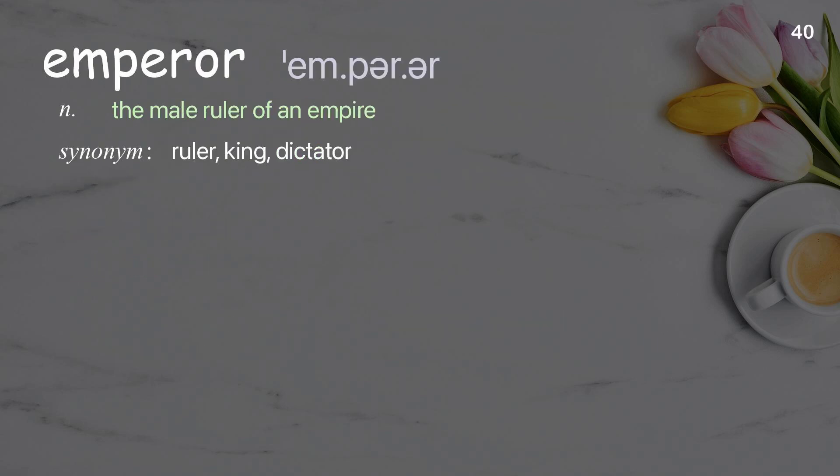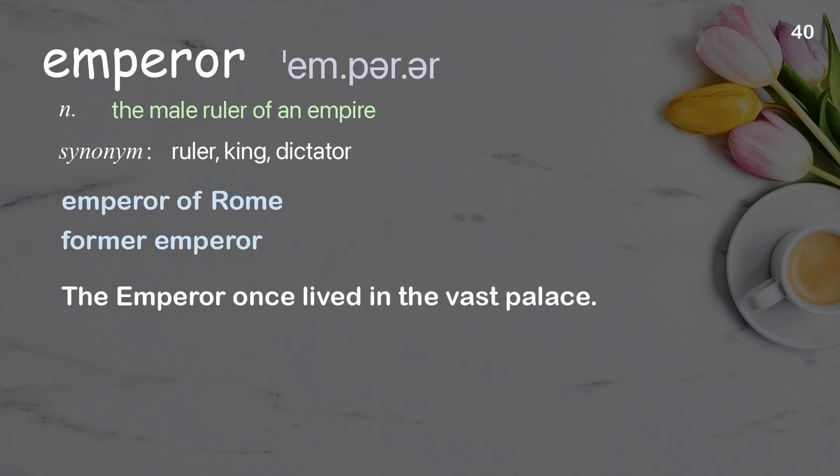Emperor: the male ruler of an empire. Examples: Emperor of Rome, former emperor. The emperor once lived in the vast palace.